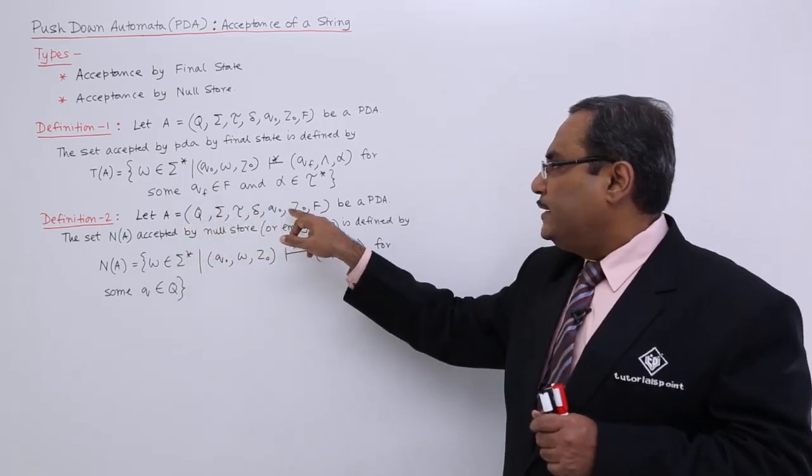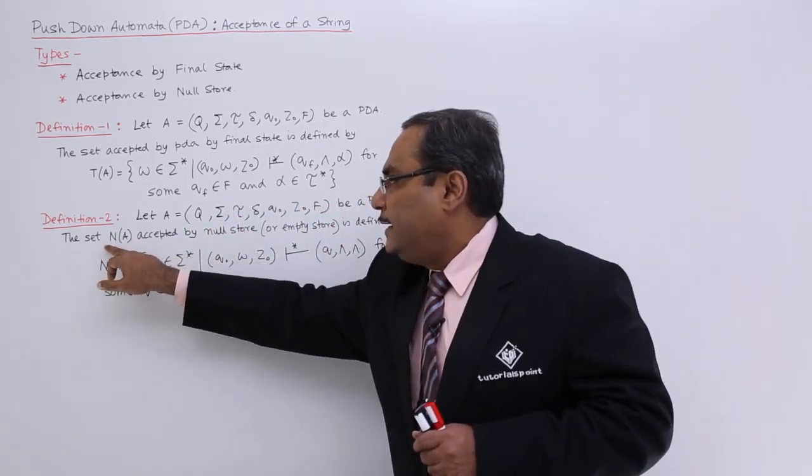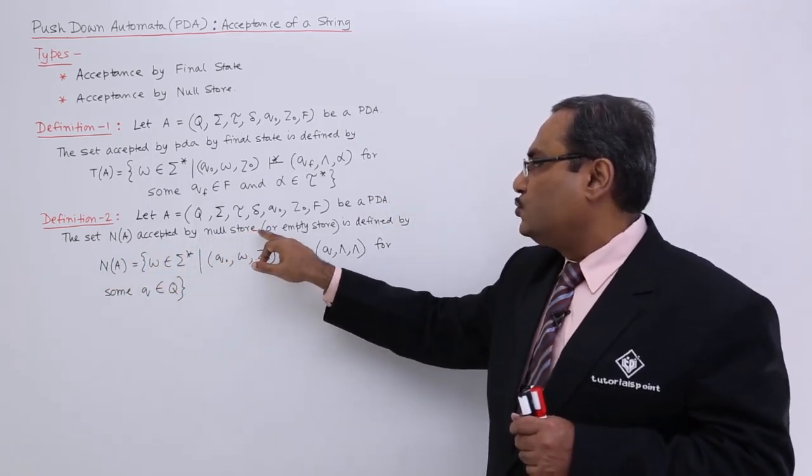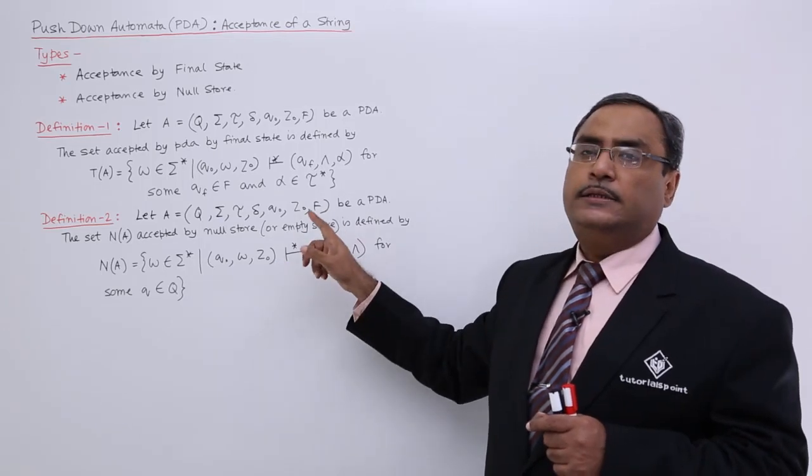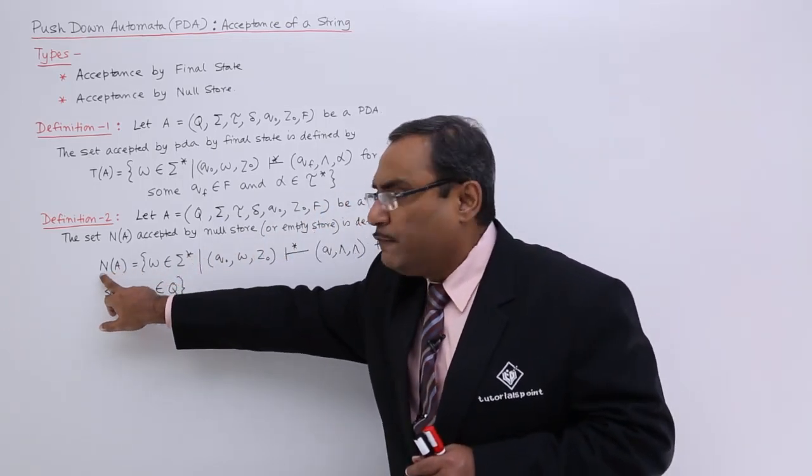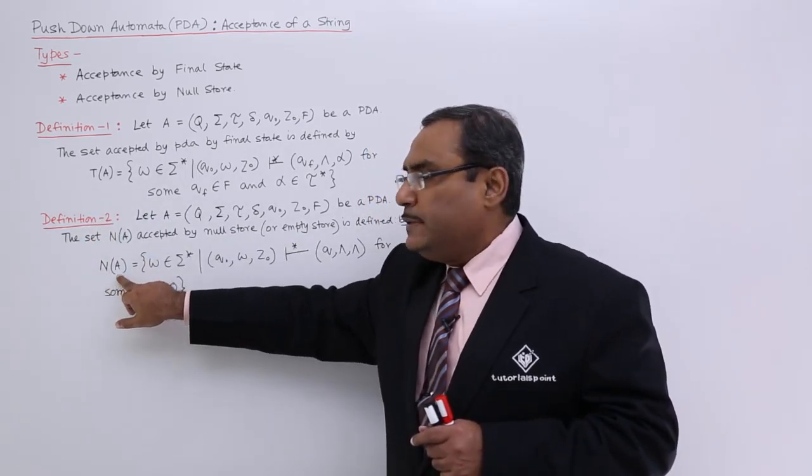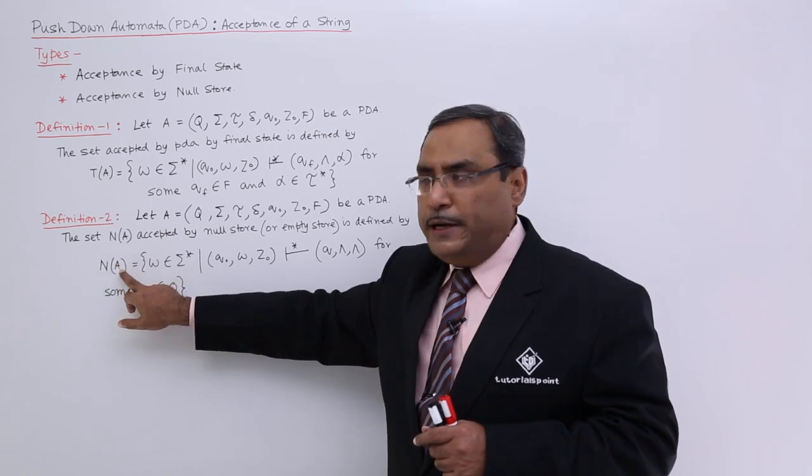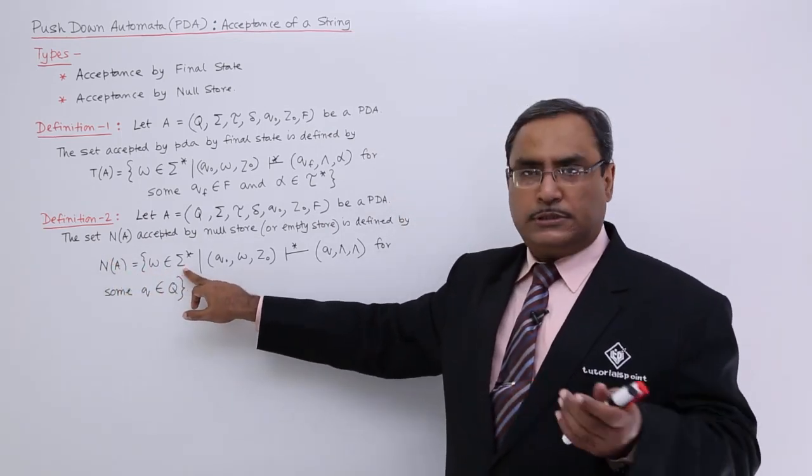Let A be a PDA. The set N(A) accepted by null store or empty store is defined by - whenever a PDA is accepting a string using null store, it will be N(A). Previously it was T(A), now it is N(A). A is the name of the PDA which will accept W, where W belongs to Σ*.